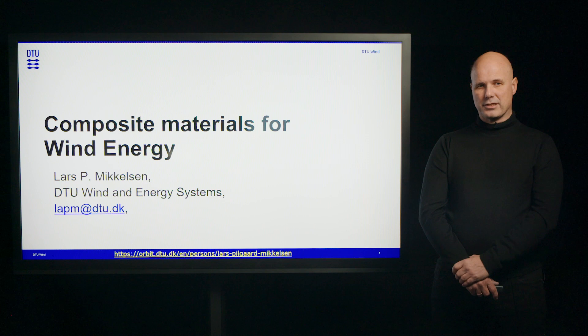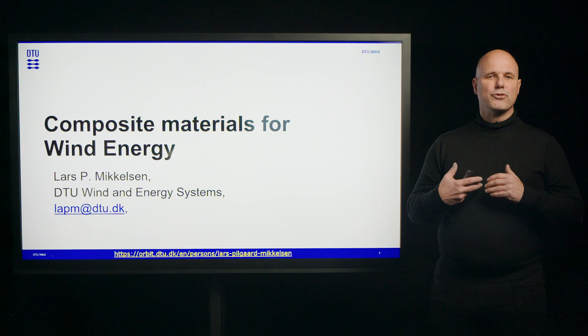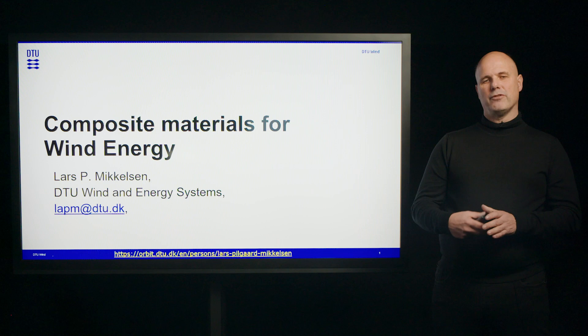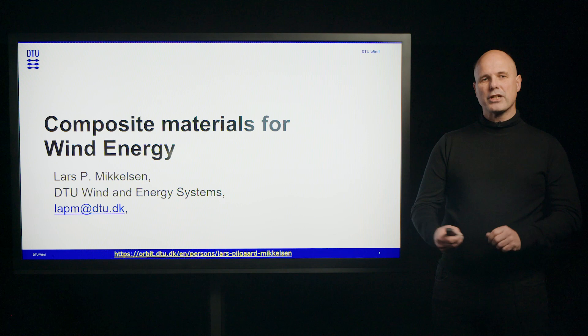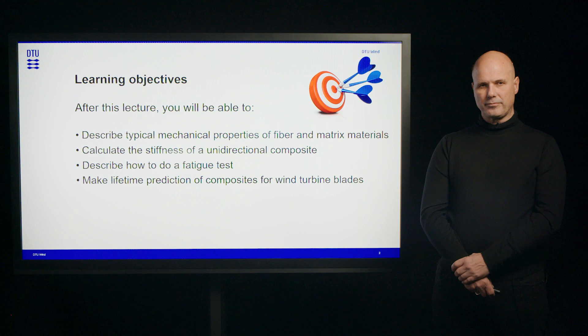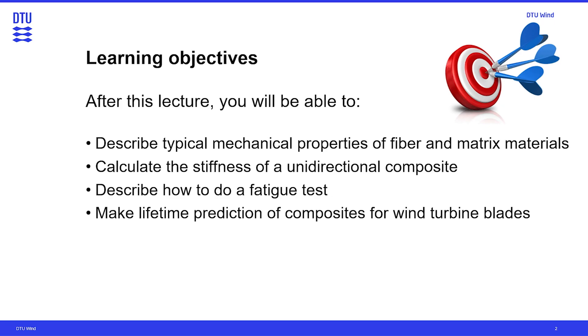I'm going to present how we can look into the composites used in wind turbine blades. You have earlier seen how the wind turbine is built up and how a blade cross section looks. Now we will look into the load carrying part of that cross section. The learning objectives of this lecture are that you, after this lecture, are able to describe typical mechanical properties of fiber and matrix materials, calculate the stiffness of a unidirectional composite, describe how to do a fatigue test, and make lifetime predictions of composites for wind turbine blades.